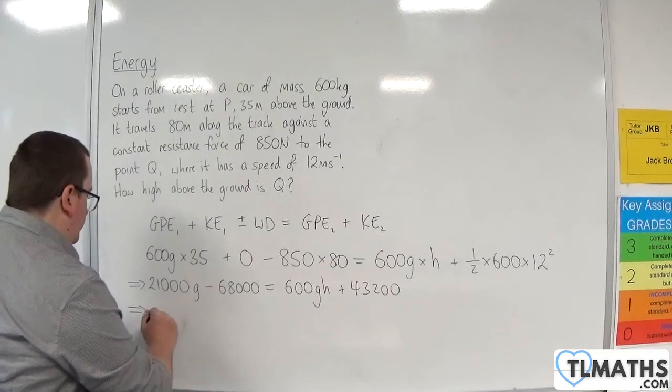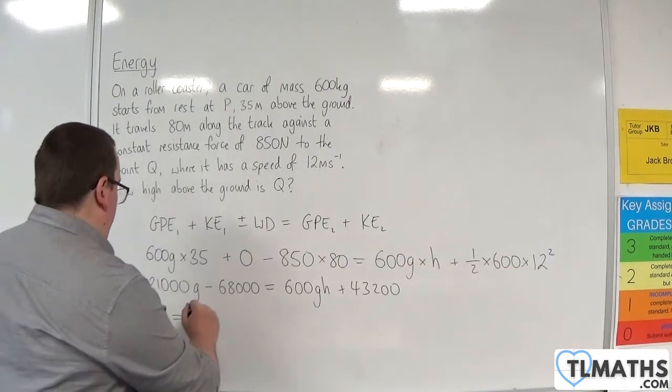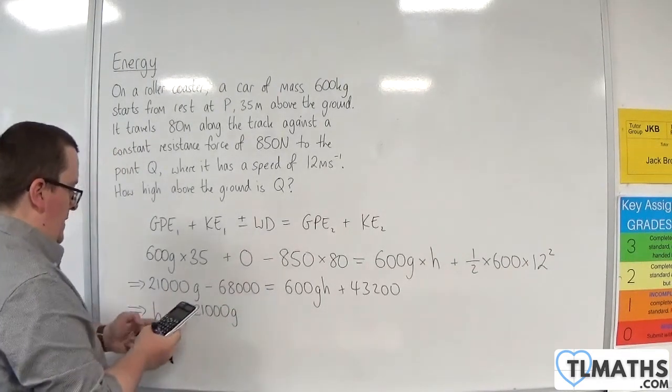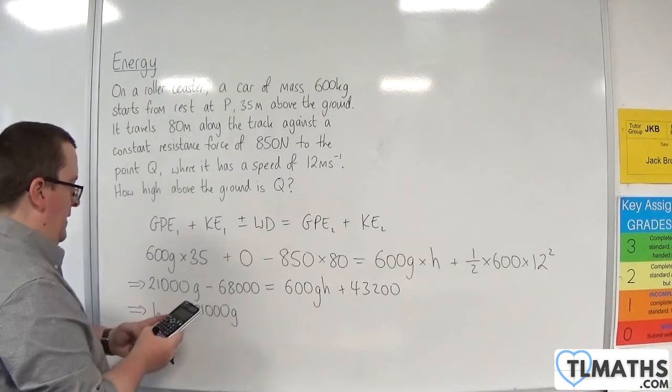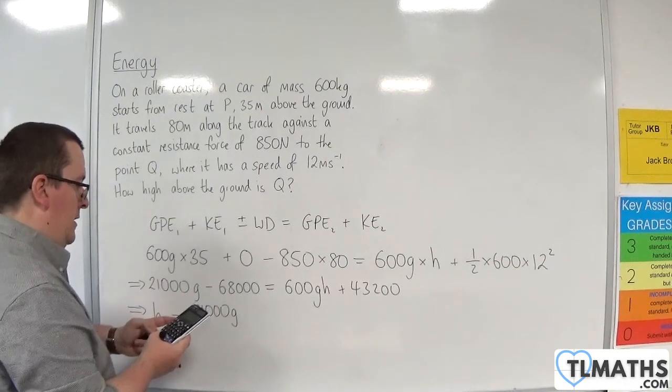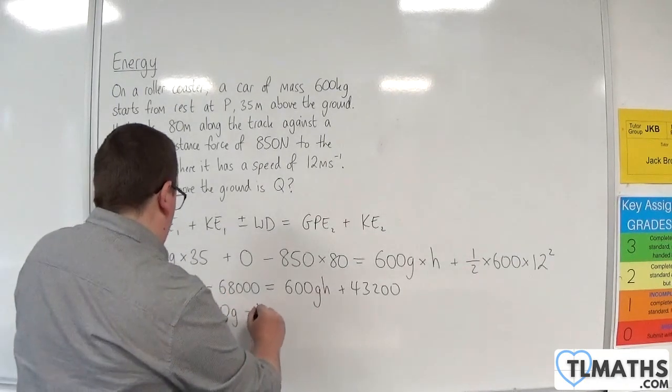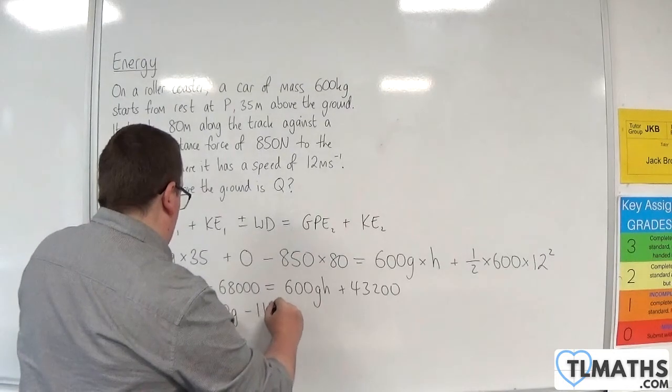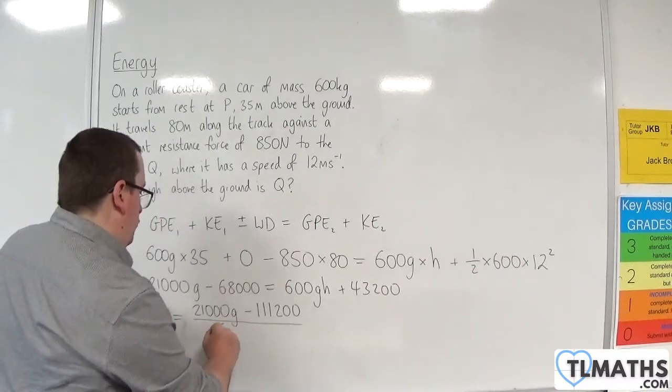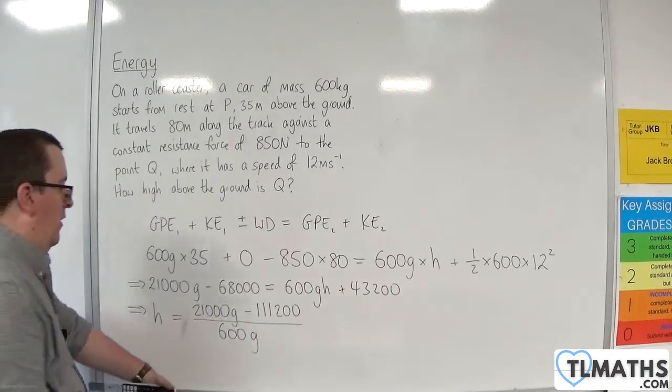So H will be equal to, we'll have the 21,000 G, and then we've got 68,000, plus 43,200. So take away 111,200, and then we're going to be dividing that by 600G. So that's H.